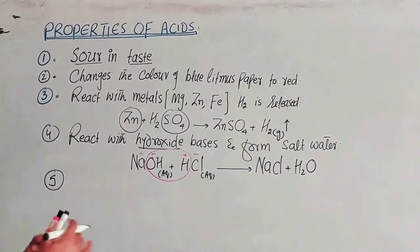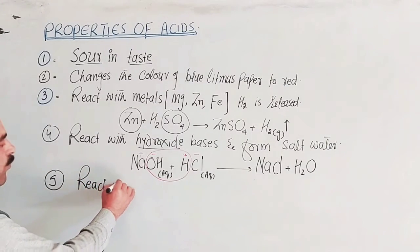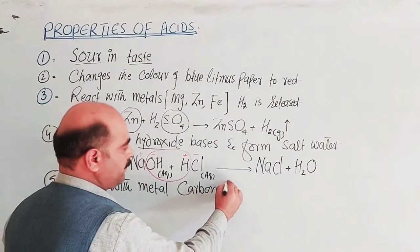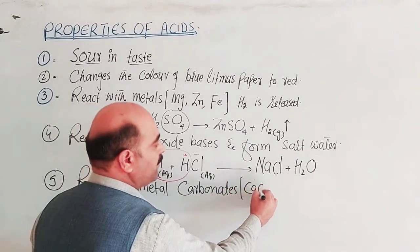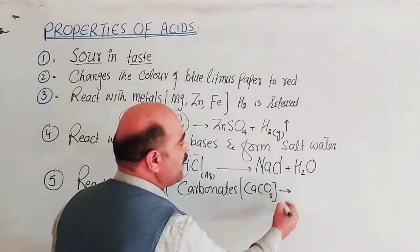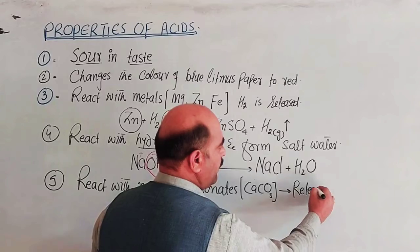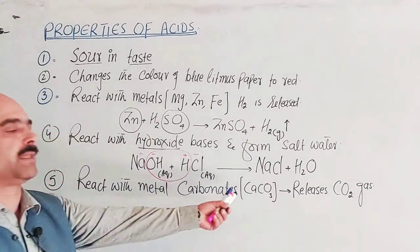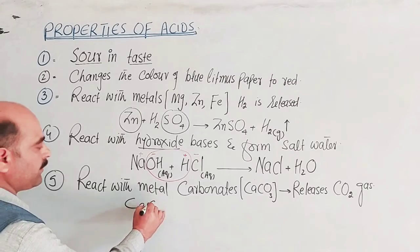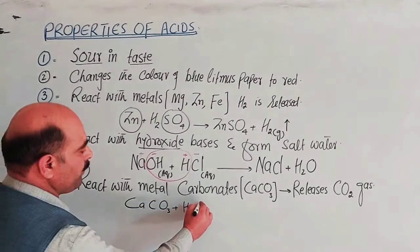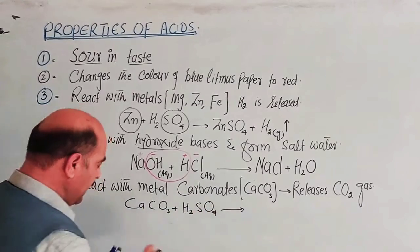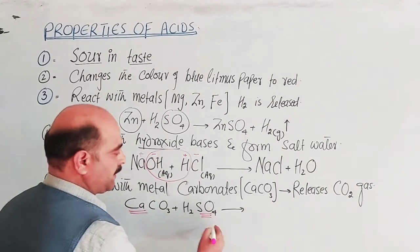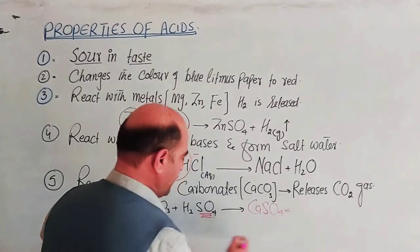This is another property of acids. The fifth property is that acids react with metal carbonates. For example, marble — calcium carbonate — is a common example. Acids react with metal carbonates and release carbon dioxide (CO₂) gas.